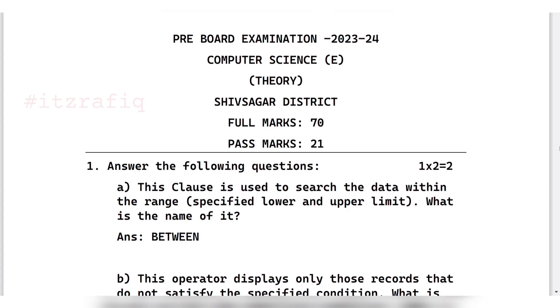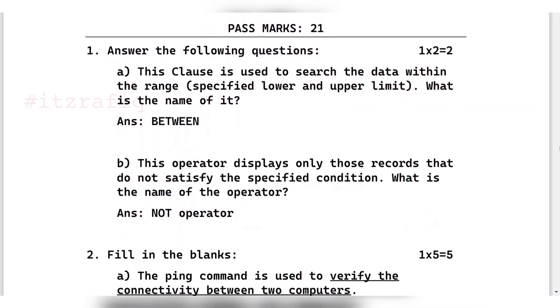This question is one of the toughest question papers that I have seen. The whole question paper is full of tough questions and I don't think that in matric you will get this level question paper. First are two one-word questions. The first question is the clause that is used to search data within the range. When you get range in MySQL questions, the answer will be BETWEEN. After that, the operator that displays only those records that do not satisfy the specified condition - this is NOT operator, a logical operator.